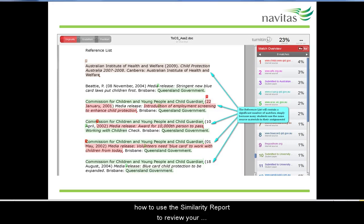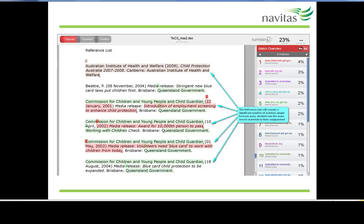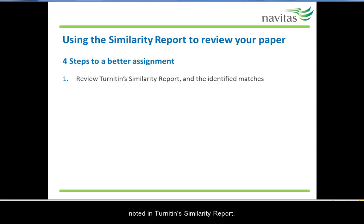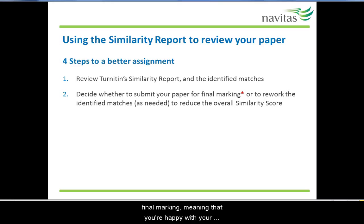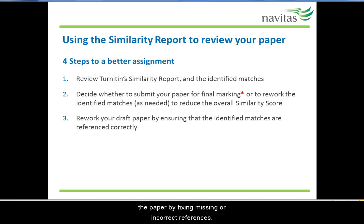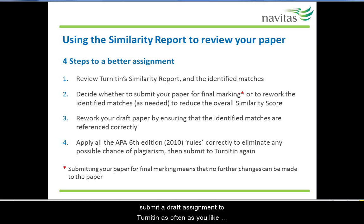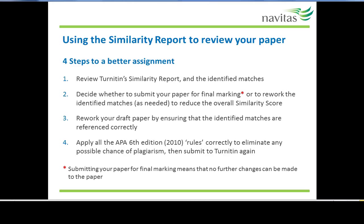Now, we'll have a look at how to use a similarity report to review your assignment and fix any identified matches that need correct referencing. There are four basic steps to submitting a better assignment for final marking. First, review the matches noted in Turnitin's similarity report. Next, decide whether you should submit the paper for final marking, meaning that you're happy with your referencing. If not, you will need to rework the paper by fixing missing or incorrect references. Finally, make sure you have applied APA 6th edition referencing rules correctly. Remember that you can submit a draft assignment to Turnitin as often as you like before submitting the assignment to your teacher for final marking.